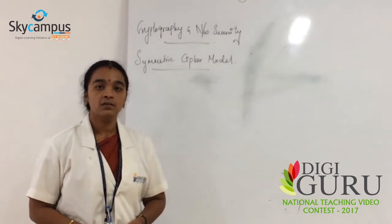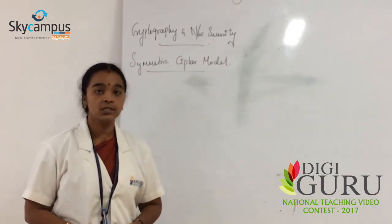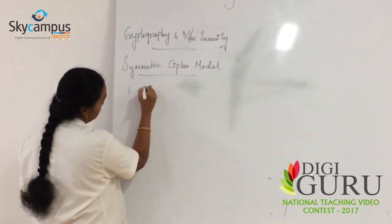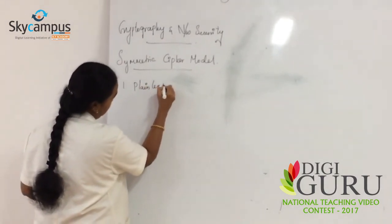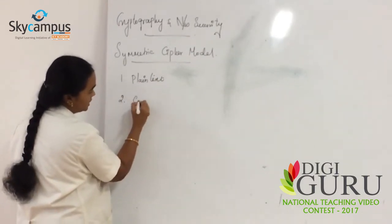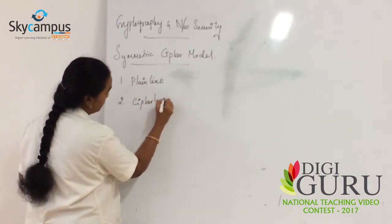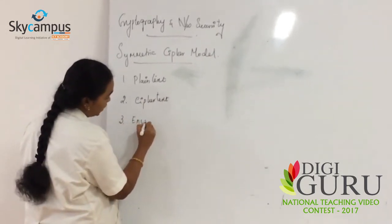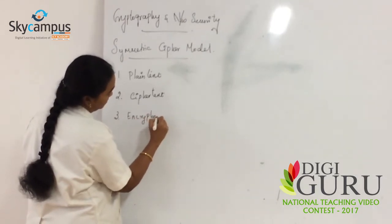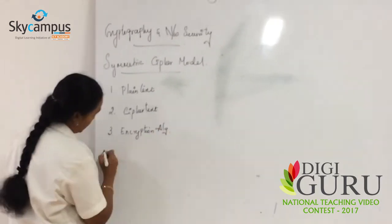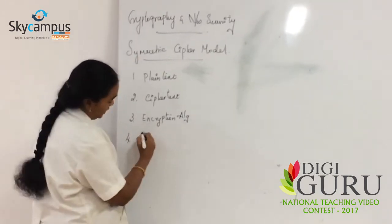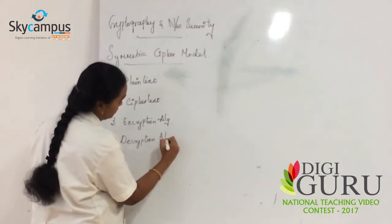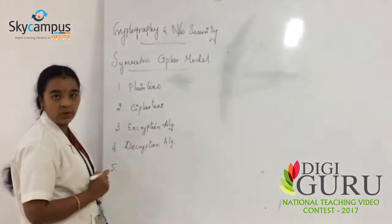Before beginning this topic, we must know some terms related with cryptography. The first one is Plaintext. The next one is Ciphertext. The third one is Encryption Algorithm. The fourth one is Decryption Algorithm. And the last one is Key.